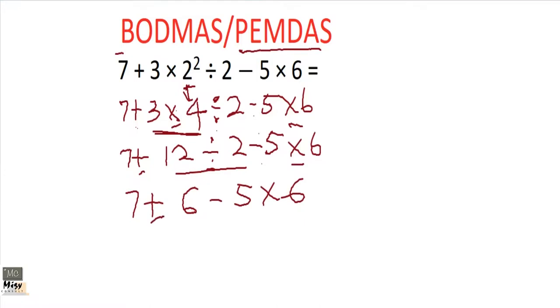Now we are left with plus, minus, and multiplication. Again, we can't do plus before multiplication, so we'll leave the plus. We can't do the minus, so we are going to do the multiplication. We still write this down: + 6 -, so 5 × 6 is 30.